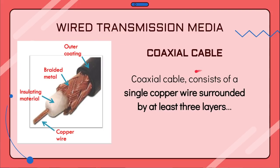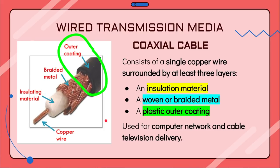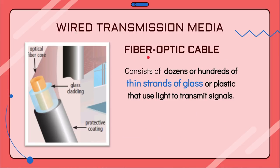The second type of wired transmission media is coaxial cable. Coaxial cable consists of a single copper wire surrounded by three layers: the first is insulation material, the second is a braided or woven metal layer, and the third is a plastic outer coating. Having these three layers helps transmit data with little interruption or distortion. Coaxial cable is normally used for computer networks and cable television delivery.